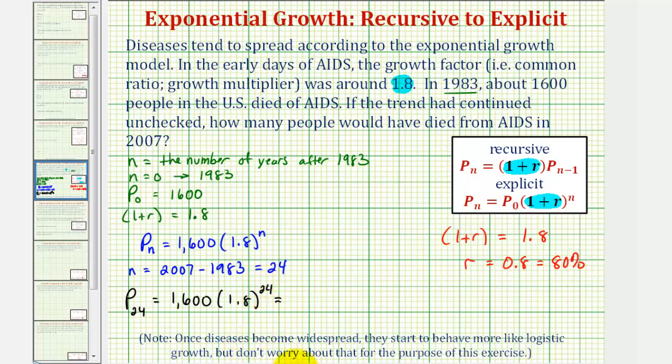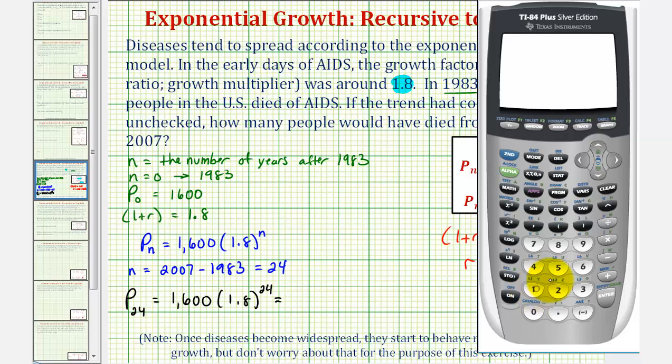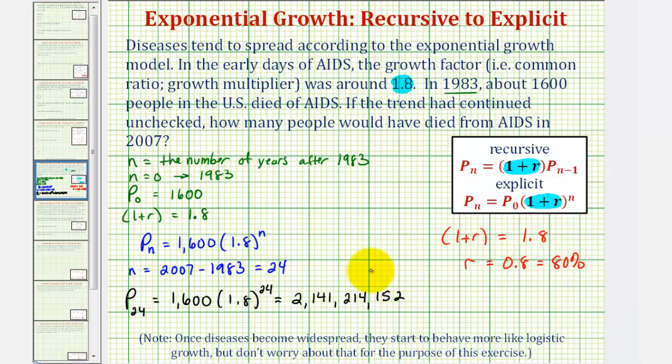And now we'll go to the calculator. Here, we have 1,600 times 1.8 raised to the power of 24. This gives us 2,141,214,152. And this would be people.